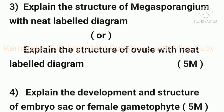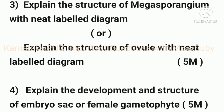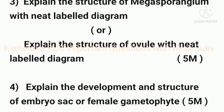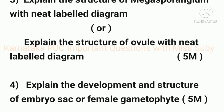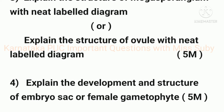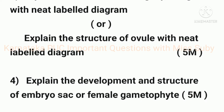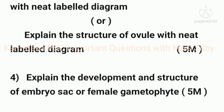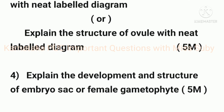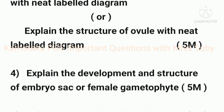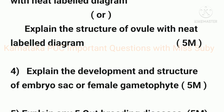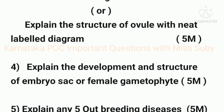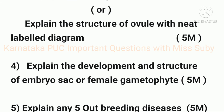The next question is explain the structure of megaspore and embryo with neat labelled diagram, or explain the structure of ovule with neat labelled diagram, which also carries 5 marks. The fourth question is explain the development and structure of embryo sac or female gametophyte, carrying 5 marks.